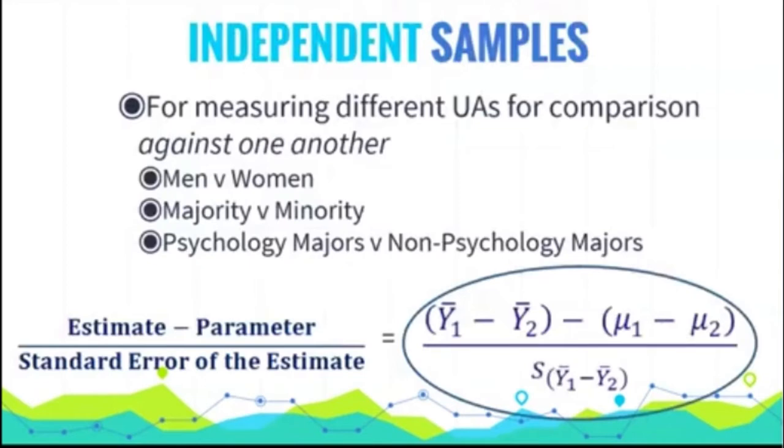So we can only compare two groups at a time, and these groups must be independent groups. You can imagine comparing a random sample of men versus a random sample of women, comparing those who are a minority versus a majority in some region of the world, comparing those who are major in psych versus those who are not. Again, any time the groups are independent.